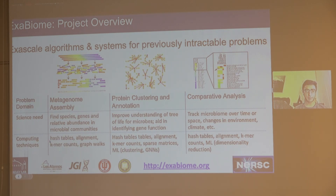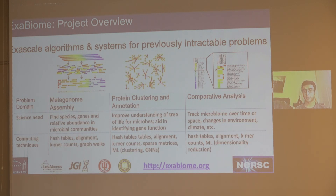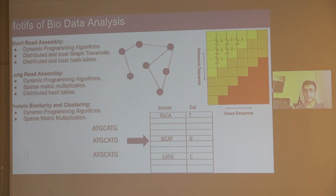If you look at the computing techniques used across these software categories, there's a commonality — for example, hash tables, alignments, and k-mer counting are algorithmic motifs common across all of them. This allows us to generalize our implementations across all these software tools. I'll narrow my discussion to three problem types: short-read assembly, long-read assembly, and protein similarity clustering. Dynamic programming alignments are common across all three domains, distributed and local graph traversals using hash tables are common in the first two, and sparse matrix multiplication appears in the last two.